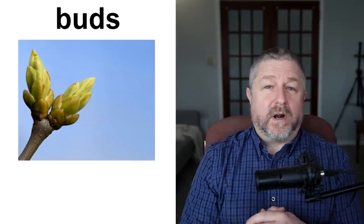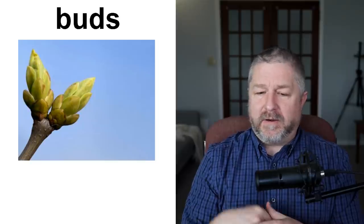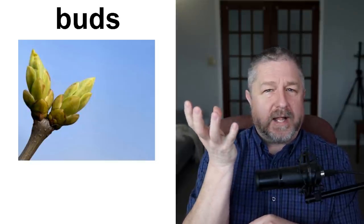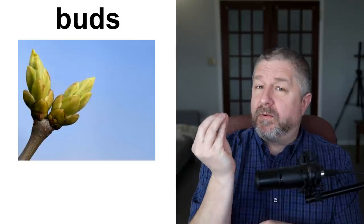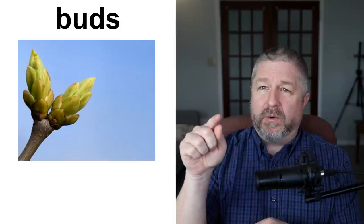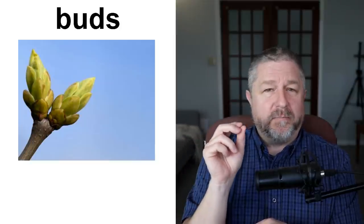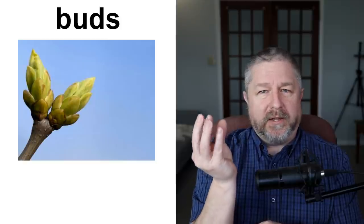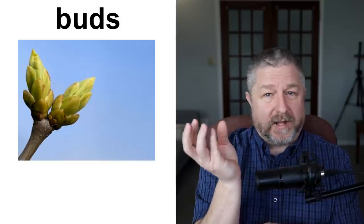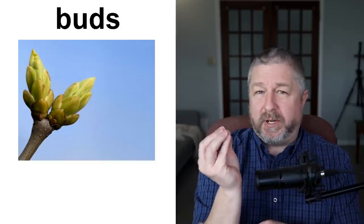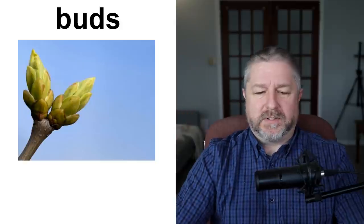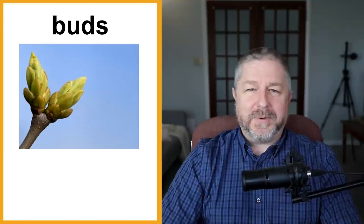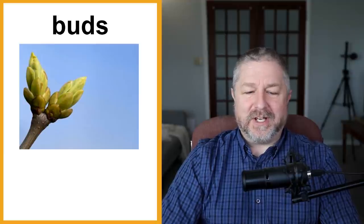There are a lot of buds on the trees right now. Buds are things that form just before a flower comes out or just before leaves come out. Right now, the trees have a lot of buds on them. On some trees, those buds will open and there will be a blossom or a little flower. On some trees, the buds will open and leaves will come out. I'm looking forward to things leafing out so that we have a little bit of shade.